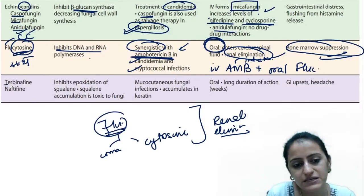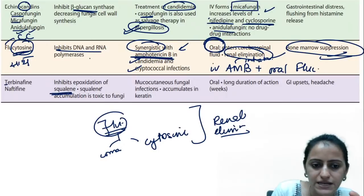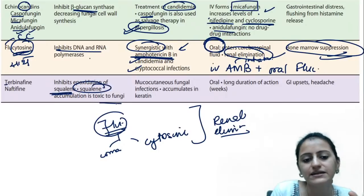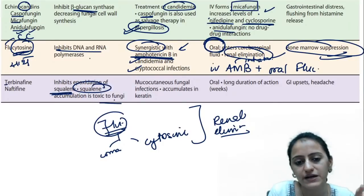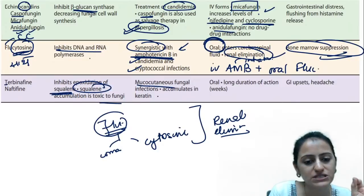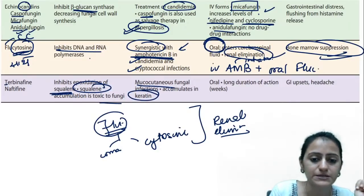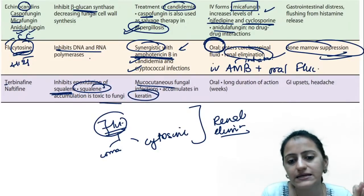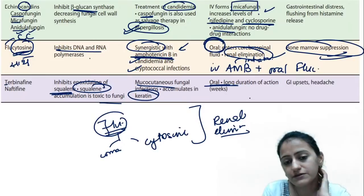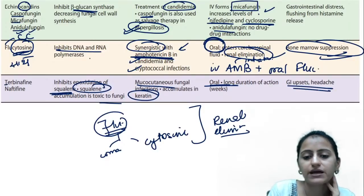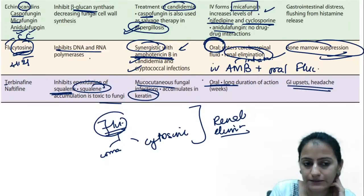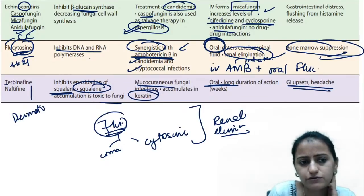Terbinafine and naftifine inhibit squalene epoxidase — squalene accumulates and is toxic to fungi. Used in mucocutaneous infections, with affinity to keratin. Terbinafine can be given orally. Drug of choice for dermatophytosis. May cause GI upset or headache.